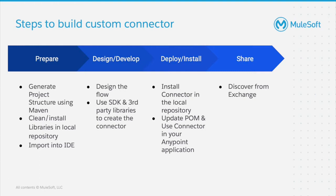Depending on what target system you're connecting to, you may update the POM file with the required third-party library. For example, in this video, I'll show you how to create a connector to communicate with Oracle Cloud's object storage APIs. For this, I'm going to add the Oracle Cloud library dependency to the POM file. We would then clean the project and make it ready to import into AnyPoint Studio by running a few Maven commands.